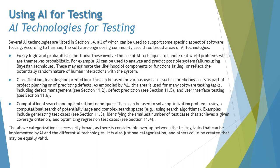Talking about computational search and optimization techniques — there is already a lot of research happening using AI for this. These can be used to solve optimization problems using a computational search of potentially large and complex search spaces. Examples include generating test cases, identifying the smallest number of test cases that achieves a given coverage criterion, and optimizing regression test cases. All you need to provide is the ranges and the AI system will revert with the classification and number of classes required to be tested. It can even do pairwise comparison and give you the required dataset combinations.